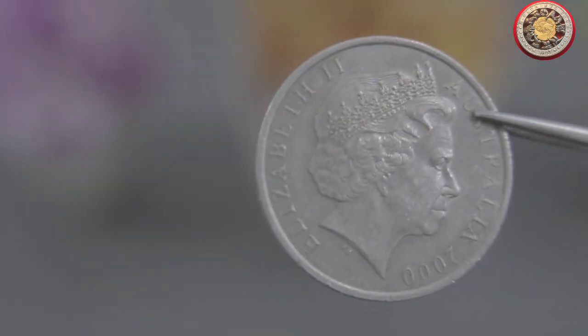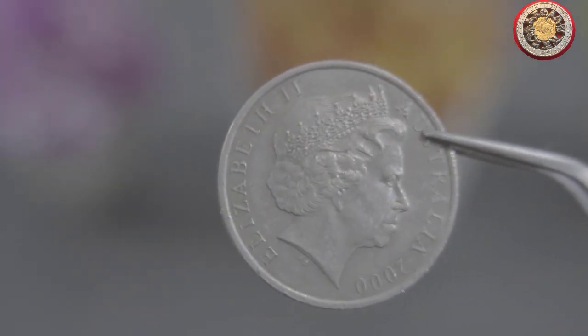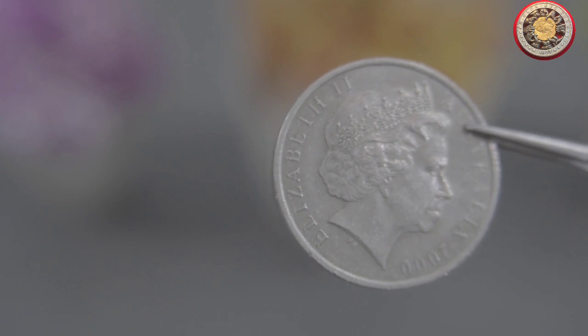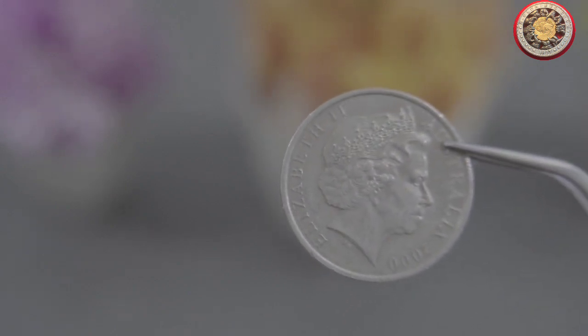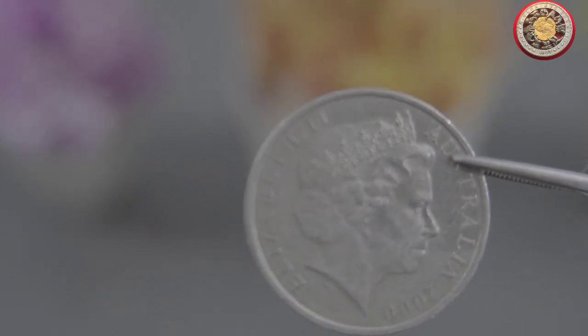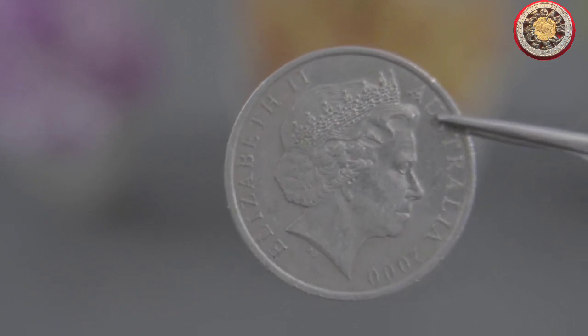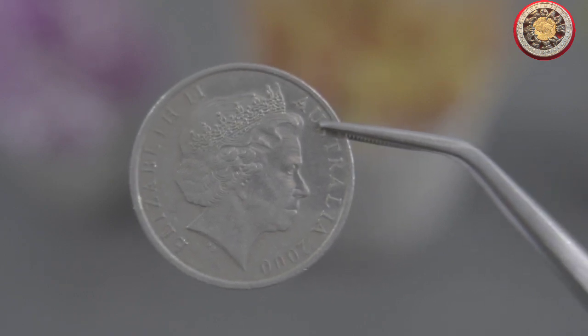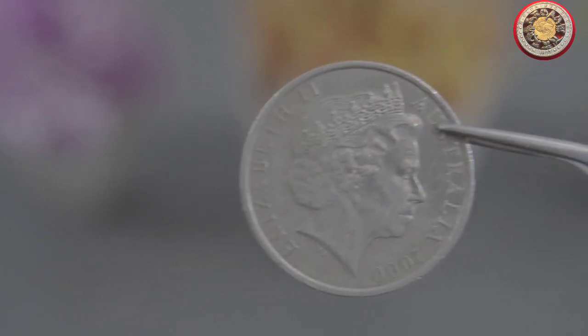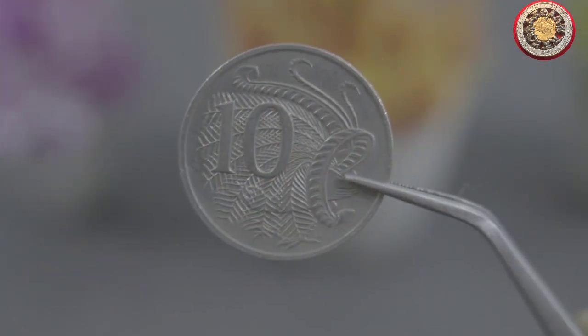From the indigenous peoples who first inhabited the continent to the European explorers who arrived in the 17th century, to the modern, diverse nation that Australia is today, this coin represents a snapshot of a country and its people. So, if you come across a 10-cent 2000 coin from Australia, take a moment to appreciate the history and symbolism behind it.